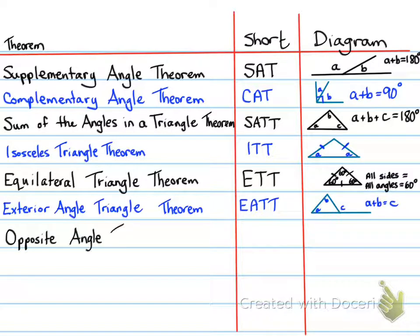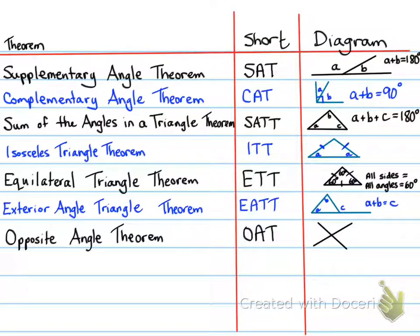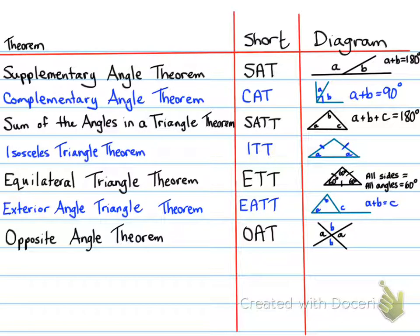Next is the Opposite Angle Theorem, or OAT. It states that when two lines intersect, the opposite angles are equal — so angle A equals angle A on the opposite side, and angle B equals angle B on the opposite side.